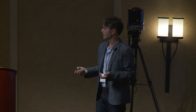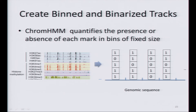The first step of ChromHMM is what they call the binarization of the tracks. Essentially, if you have multiple tracks for these histone marks, you first need to decide the resolution. What ChromHMM does is divide the genome into bins — the default option is 200 base pairs. Then, where there is a strong signal, ChromHMM will put a 1. At the end of this step you will get binarized tracks where you have a 1 if the histone mark is present and 0 otherwise.